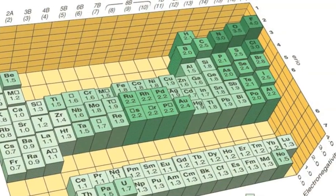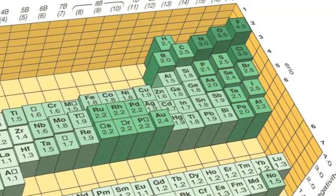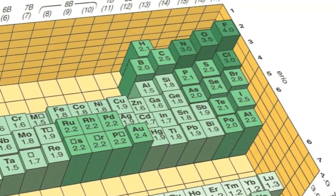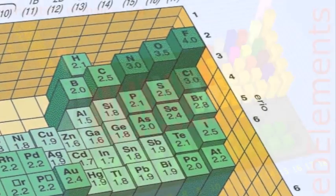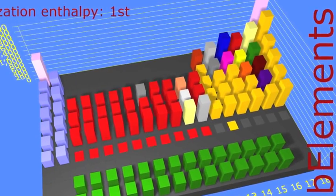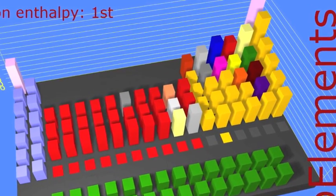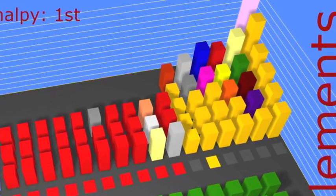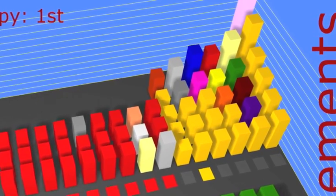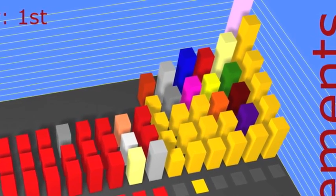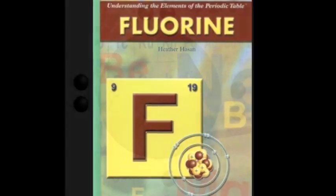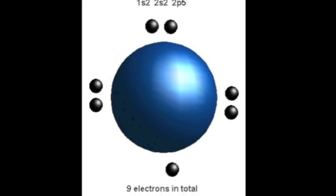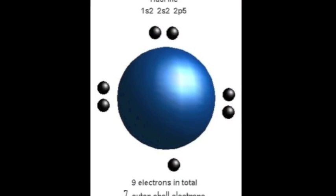The upper right side of the periodic table has high electronegativity. The upper right side of the periodic table has high ionization energy. Up there is fluorine and it's mean, and it wants electrons really, really bad.